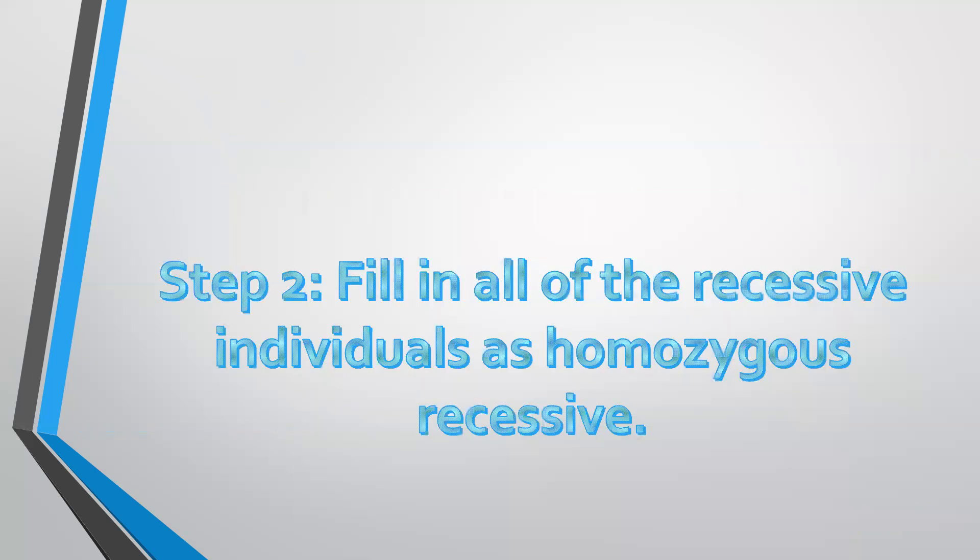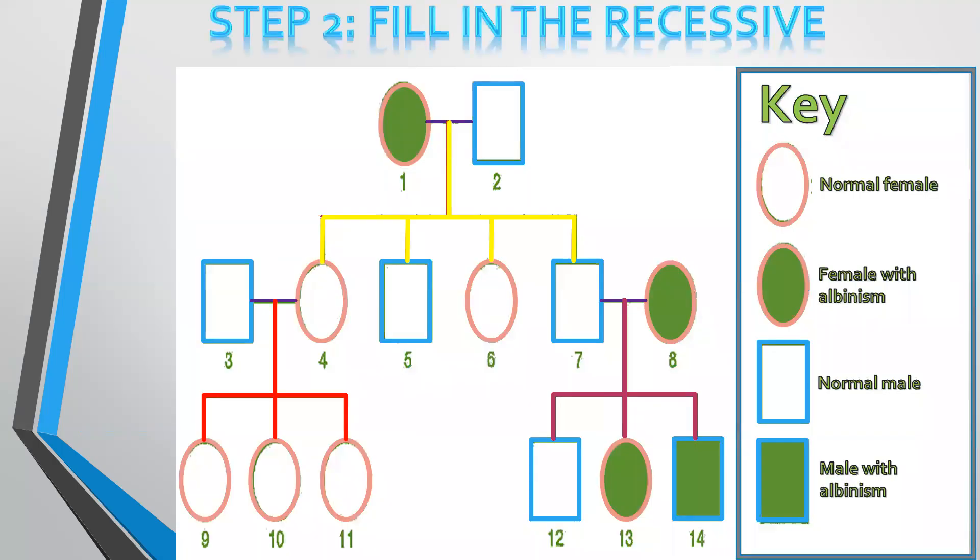Now using that information for the next step, we're going to fill in all of the recessive individuals first as being homozygous recessive because we are sure of their genotype. So on this particular pedigree diagram, we know that all of the individuals that are shaded in green, these ones have albinism. Number one, number eight, number 13, and number 14 will fill in two small letter A's because we are sure of their genotype.